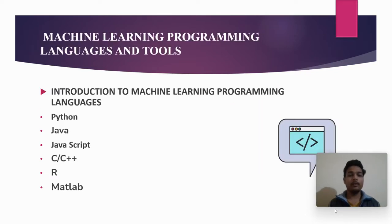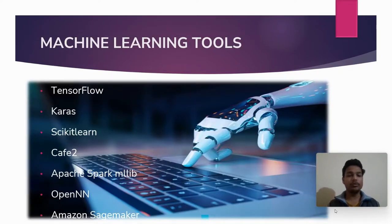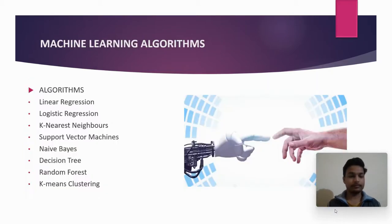Now, machine learning programming languages and tools. We know how we program machine learning models with the help of some languages to train our models. These include Python, Java, JavaScript, C, C++, R, and MATLAB. Some tools we use include TensorFlow, Keras, Apache, and others.